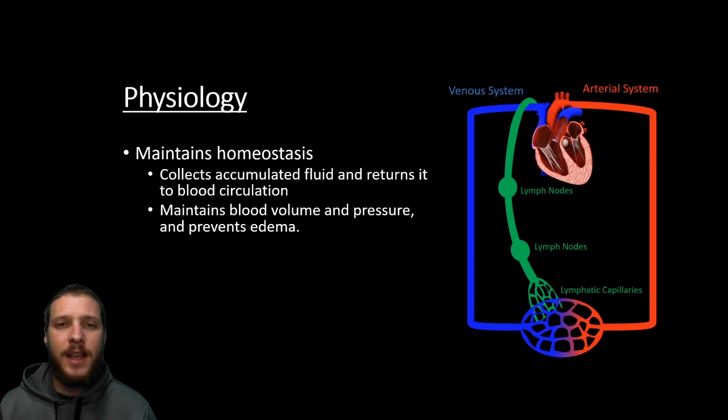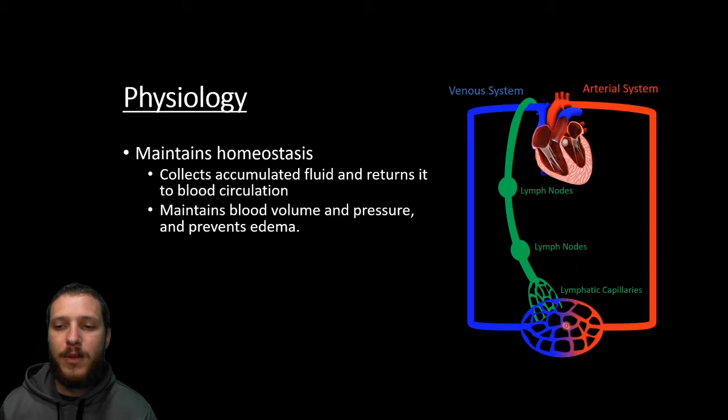Looking at the physiology, like every other system of the body, it's going to maintain homeostasis. Looking at a simplified diagram of the cardiovascular system: in red we have the arterioles, down here is our capillary bed, and then we have the venous system returning to the heart. You can see the cardiovascular system is a loop — it travels in a circle, delivers oxygen, and releases carbon dioxide.